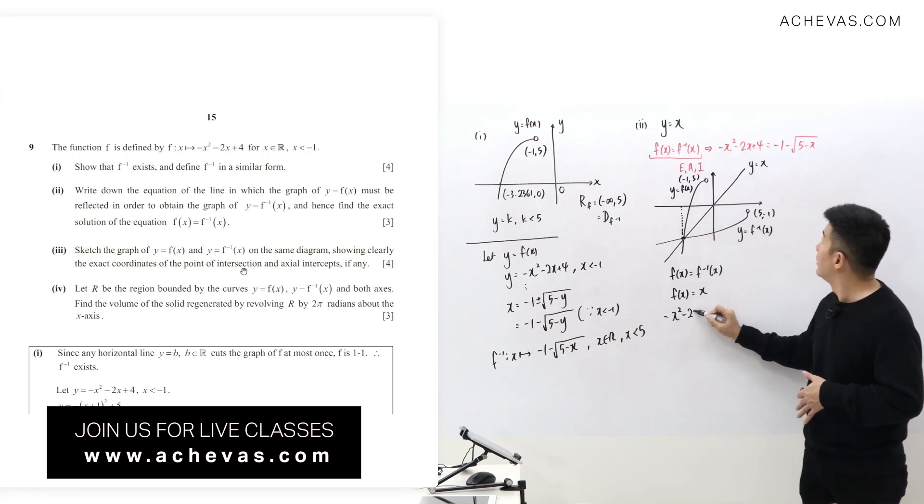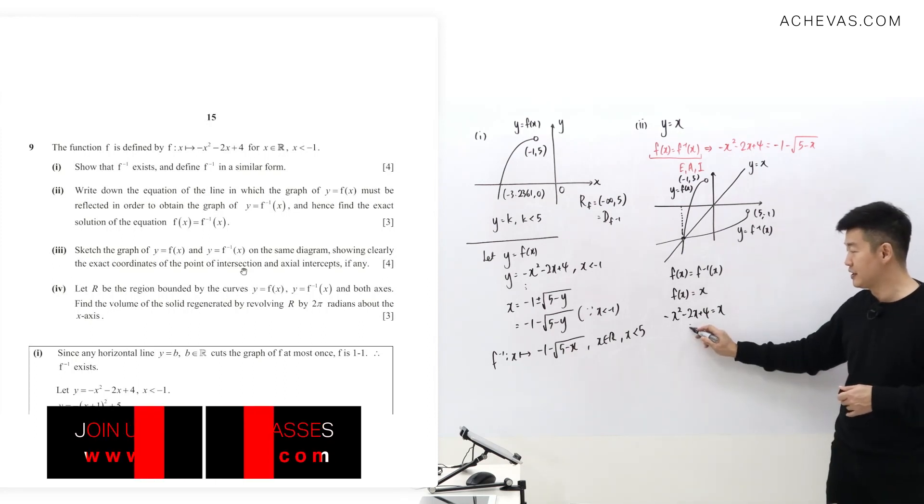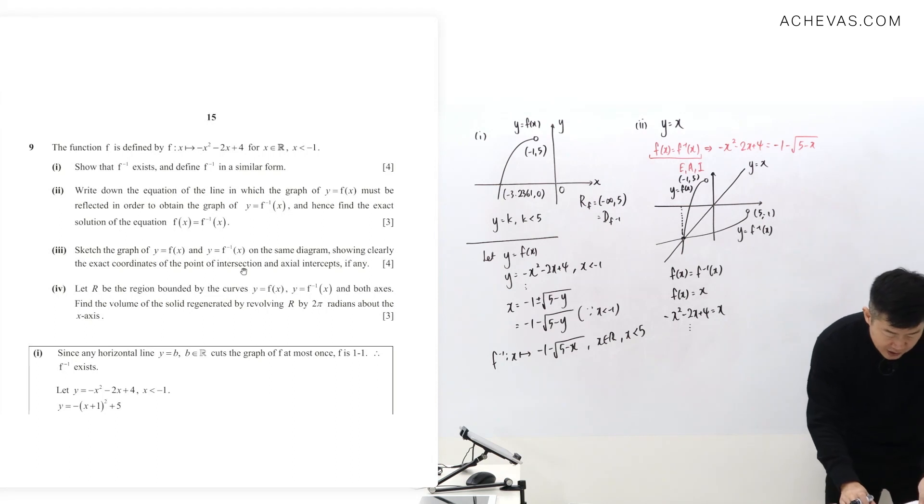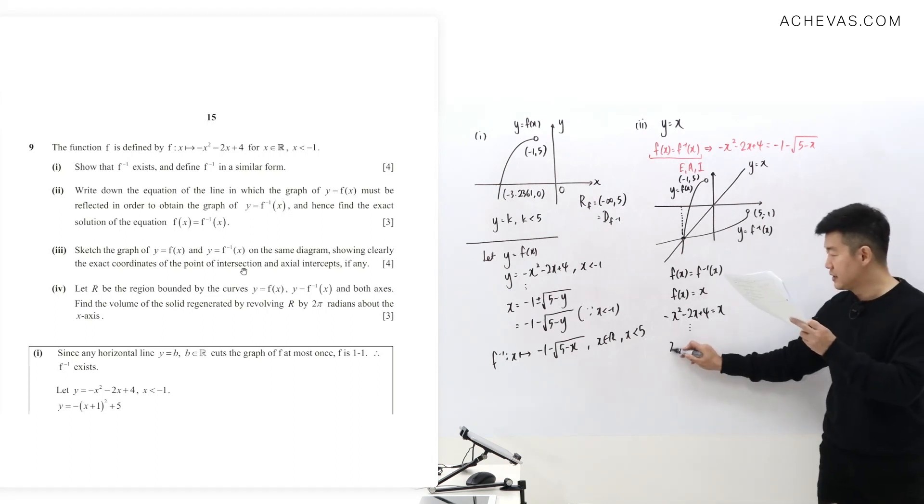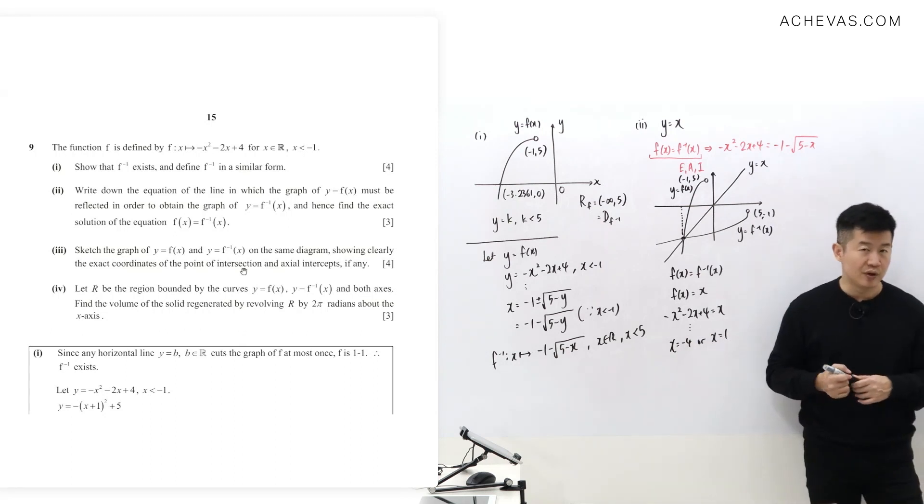It is a process of improvisation. And when you work on this, you are going to get two answers: one is x equals negative 4, the other one is x equals 1. Based on the graph, you already know that this is going to be rejected.